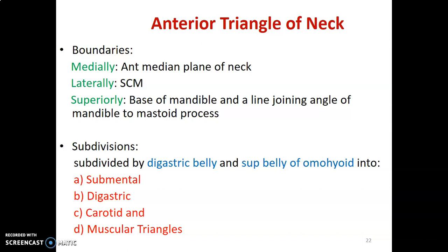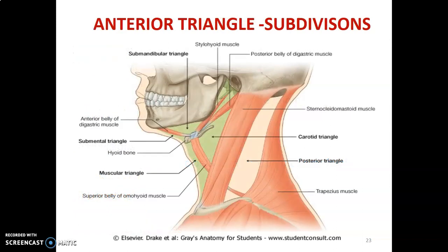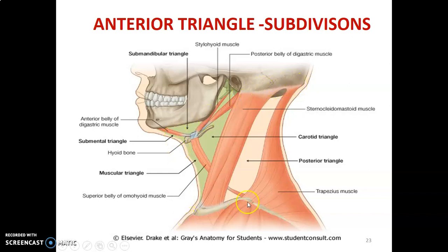Remember you need to go back to the video where we discuss the quadrilateral space of the neck, and from there you'll understand how we come about the anterior triangle of the neck. The quadrilateral space has the anterior median line anteriorly, the clavicle inferiorly, the anterior border of trapezius posteriorly, and superiorly from the base of the mandible and the line joining the angle of the mandible to the mastoid, continuing to the superior nuchal line.